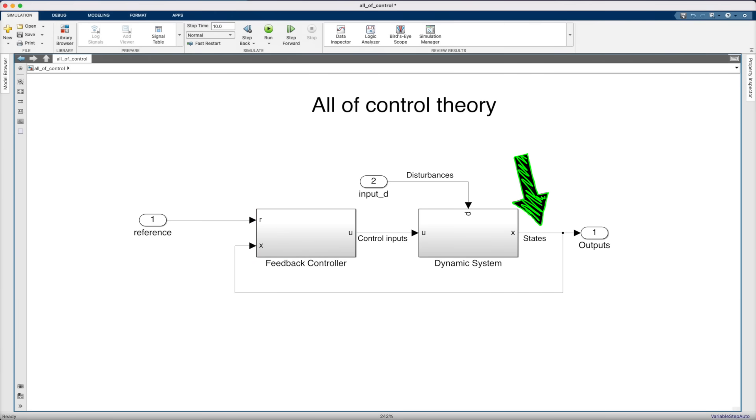And in this way, if the system state starts to deviate from the reference, either because of disturbances or because of errors in our understanding of the system, then the controller can recognize those deviations, those errors, and adjust the control inputs accordingly.